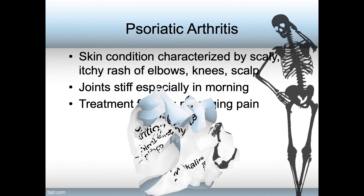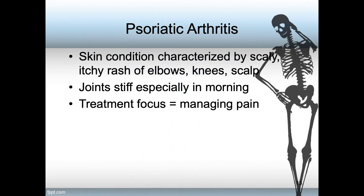Another type of arthritis is psoriatic arthritis. It is a skin condition characterized by a scaly, itchy rash of the elbows, knees, and scalp. The joints are stiff, especially in the morning. The treatment focus for psoriatic arthritis is managing pain and treating the psoriasis.